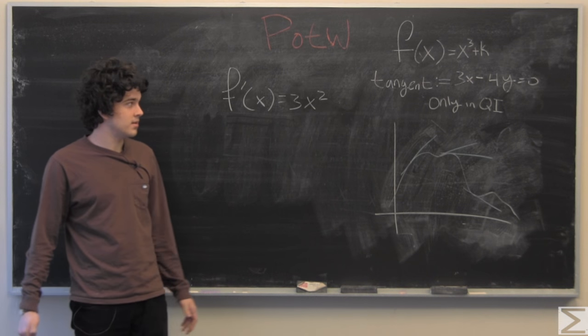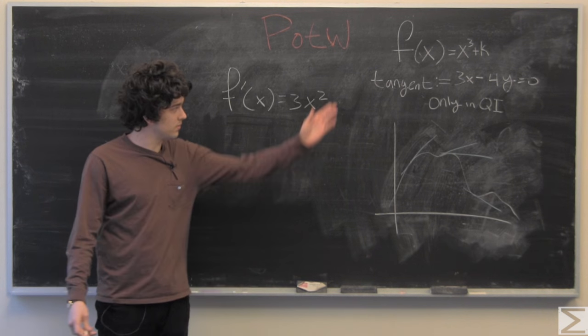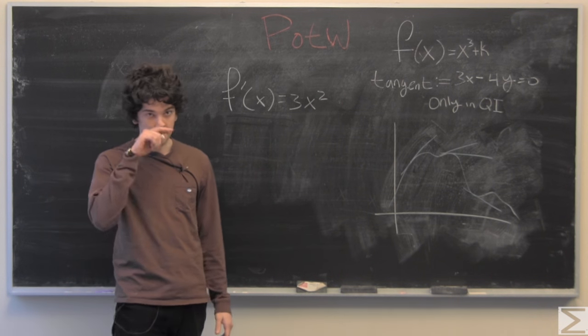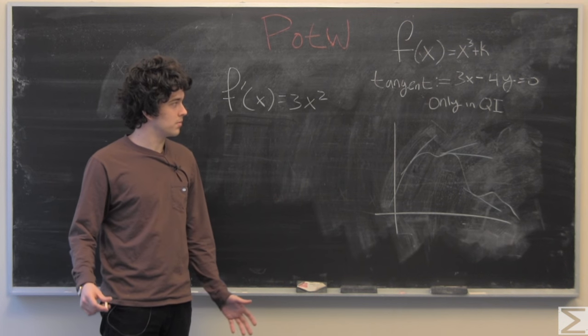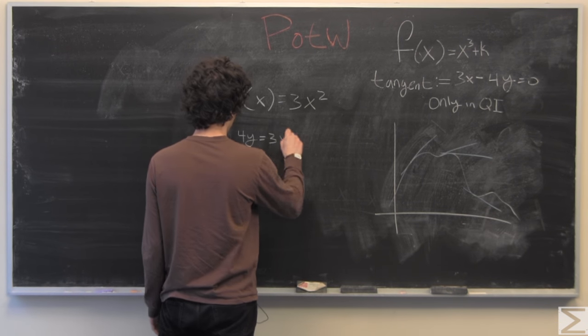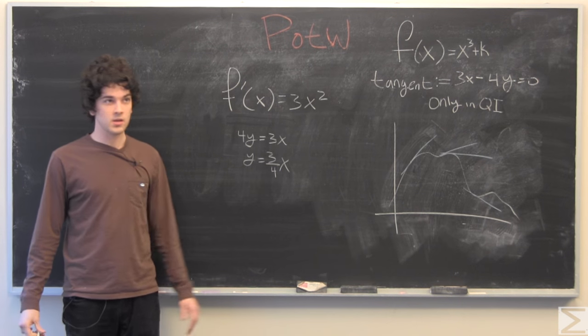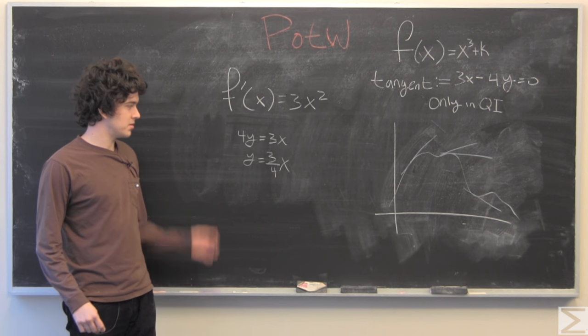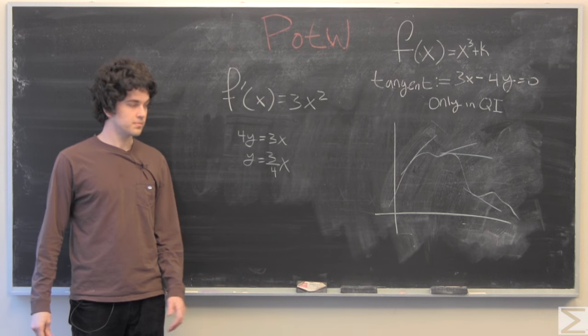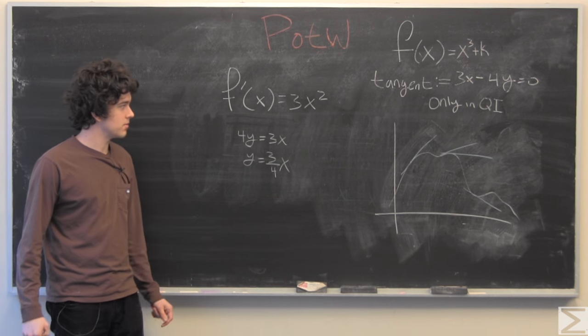And we also know that the tangent line's equation at any point in that function is given by this formula, which I will simplify to make it look more familiar. Now we have y = (3/4)x and just by inspection, we can say that the slope of the tangent line is 3/4.